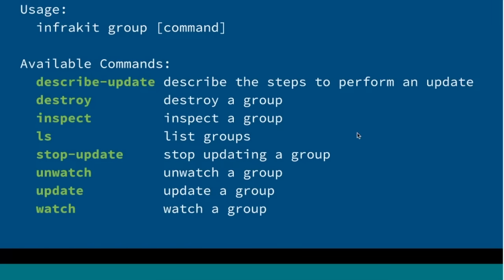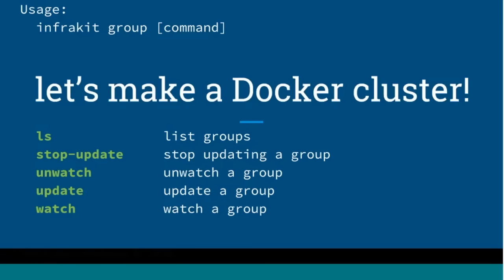If you use the InfraKit command line interface, the focus is really on group-level commands and operations. You can do rolling upgrades or rolling updates with InfraKit, so there are a few commands associated with that. These are just the broad basic operations you can perform with InfraKit, and I'll show you those in the demo.